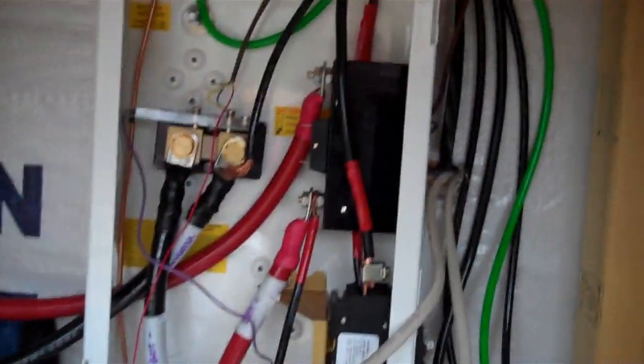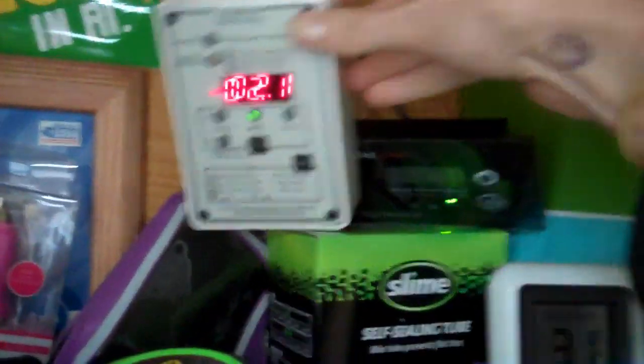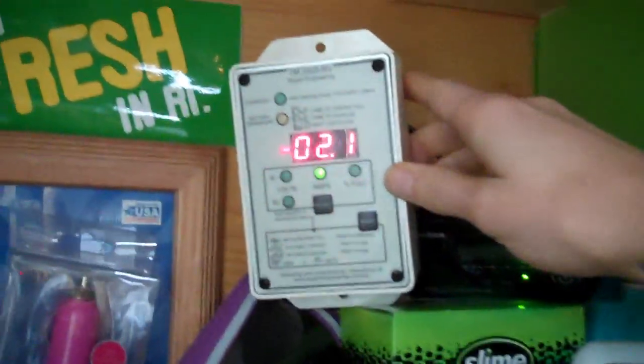But that's it for out here. So I'm going to bring you inside and show you those monitors. Okay, so here inside we have our Trimetric TM 2025 RV battery monitor, and we also have that Samlex inverter remote control. So that just lets us turn it on and off. And we can also monitor how many amps are being put out or a lot of different things. We still haven't read a bunch about that yet.